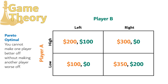Let's look for Pareto optimal outcomes in our modified game. Is high left Pareto optimal? No, because both players are better off at low right. What about high right — is that Pareto optimal? No, again both players are better off at low right now. Low left isn't Pareto optimal either, again because there's another outcome that makes both players better off. That outcome is low right, which is Pareto optimal because one or both players protest a change to every other possible outcome.